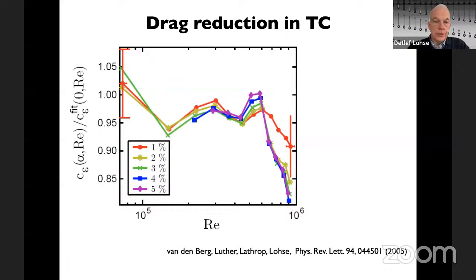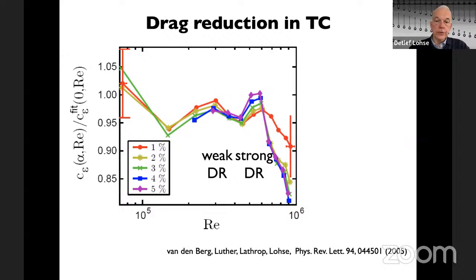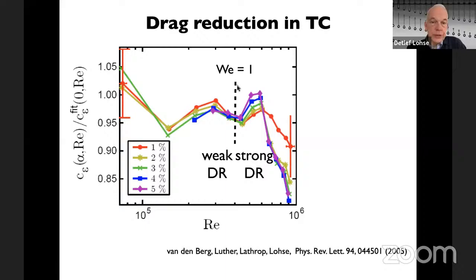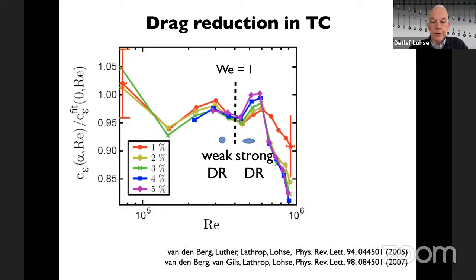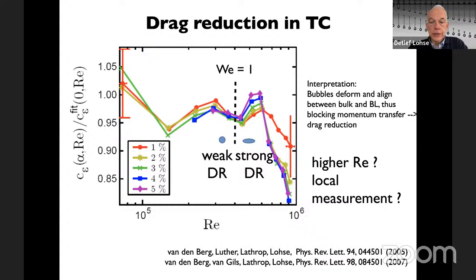We did early experiments together with Dan Lathrop back in 2005. We measured drag as a function of alpha — the volume concentration of injected gas — normalized by the drag without gas. We found two regimes: weak drag reduction up to a certain Reynolds number, and then for higher Reynolds numbers with enough gas (5%), drag reduction goes down dramatically. The transition occurs when the Weber number equals one, so the bubbles become deformable.